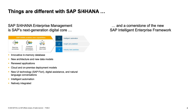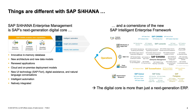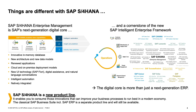On the functional scope side, SAP S/4HANA is the cornerstone of the SAP Intelligent Enterprise framework, embedded in the whole Intelligent Enterprise suite. The digital core means SAP S/4HANA contains more functionality than a classical ERP system — including background functionality from SAP Business Suite 7 products like CRM, procurement, supply chain management, transportation management, and warehouse management. The digital core is more than the next-generation ERP system, making SAP S/4HANA a new product line.